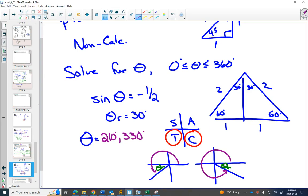So we can find our reference angle from our special triangles, and then use our CAST rule to find the actual angles, based on whether it's positive or negative.